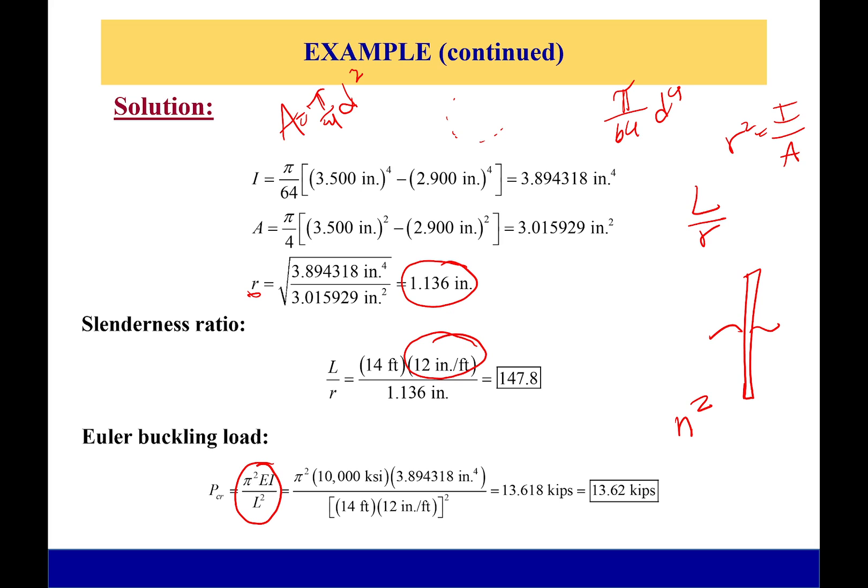One squared is still 1, so I have just π²EI/L². I have all these values; I plug them in. I get that this will fail at 13.62 kips, and that's it. So thank you all for listening, and I'll see you all next time. Bye!